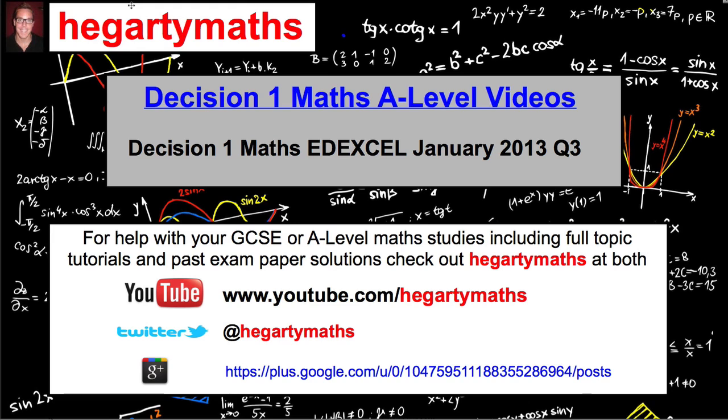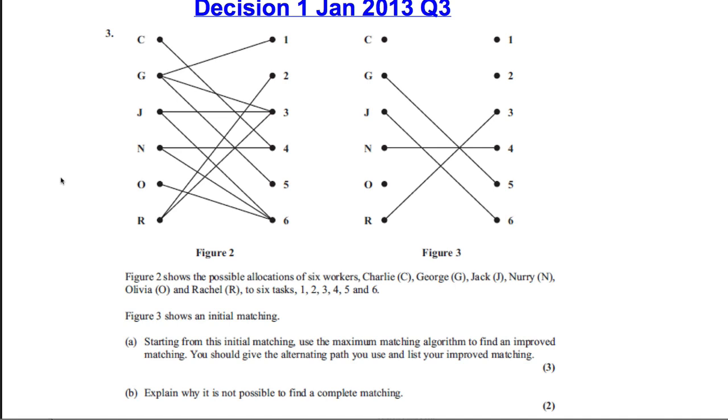In this video we'll do question 3 of the January 2013 paper. So here's the question, it's on matchings and we are told the following. Figure 2 shows the possible allocations of workers, Charlie, George, Jack, Nuri, Olivia and Rachel to 6 tasks.